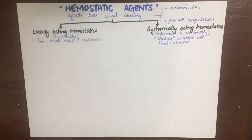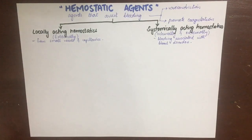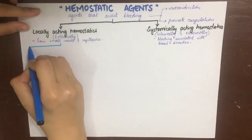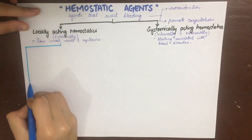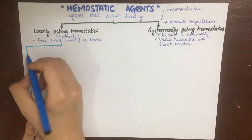Locally acting hemostatics will externally stop the bleeding, while systemically acting hemostatics will enter the system and promote the coagulation cascade. We'll discuss first the locally acting hemostatics.